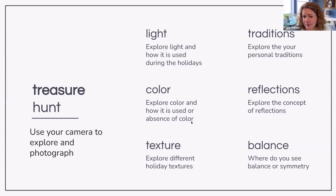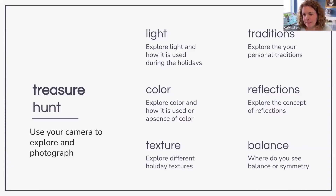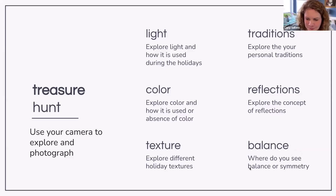Color — or absence of color — is another concept: how do you see color around the holidays or in the winter landscape? I love muted winter colors, especially at sunset with that pinkish hue. Reflections, texture — a holiday tablecloth, lace, or Christmas tree — are all different textures you can incorporate. Then play with balance and symmetry: is it balance, symmetry, or a lack of balance? These are unique ways to look at things.